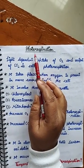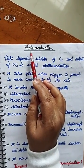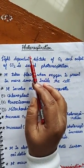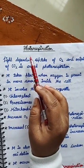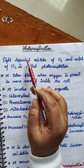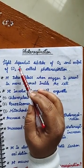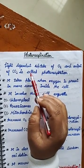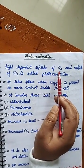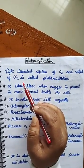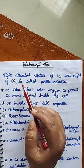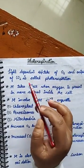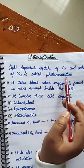Hello students, today I will teach you the topic photorespiration. What is photorespiration? It is a light dependent process in which uptake of O2 and output of CO2 takes place. So, light dependent uptake of O2 and output of CO2 is called photorespiration.